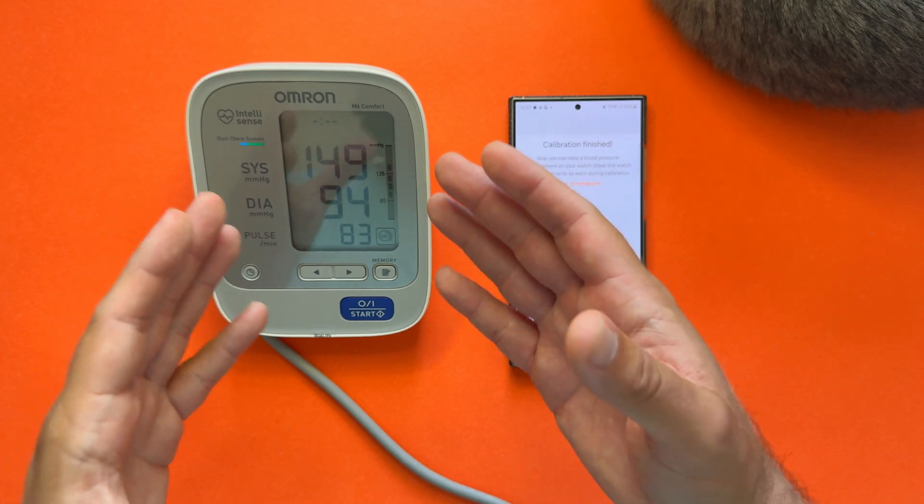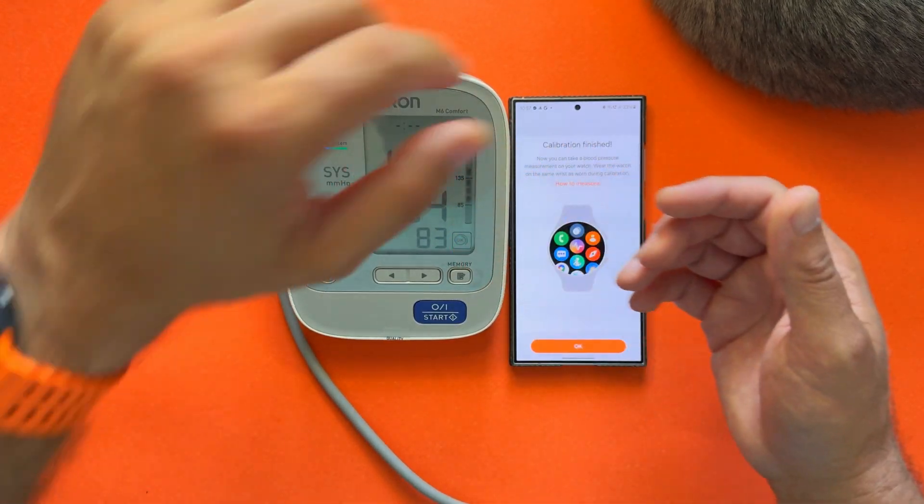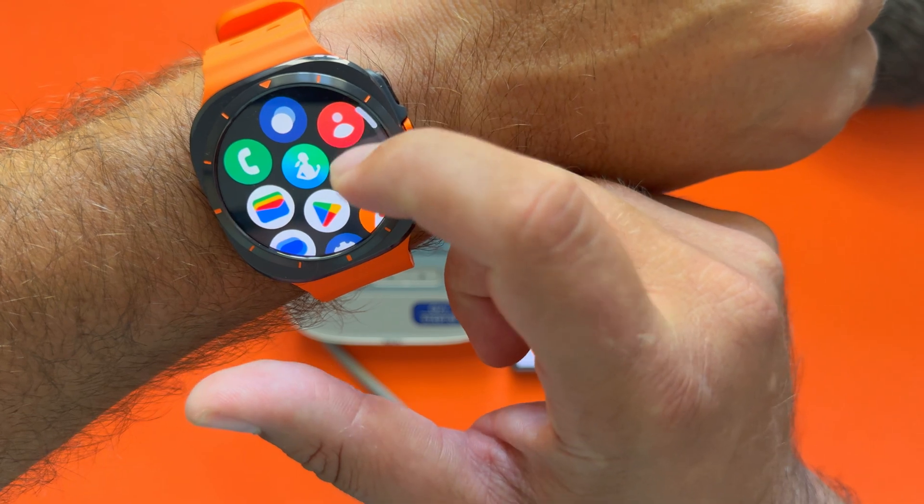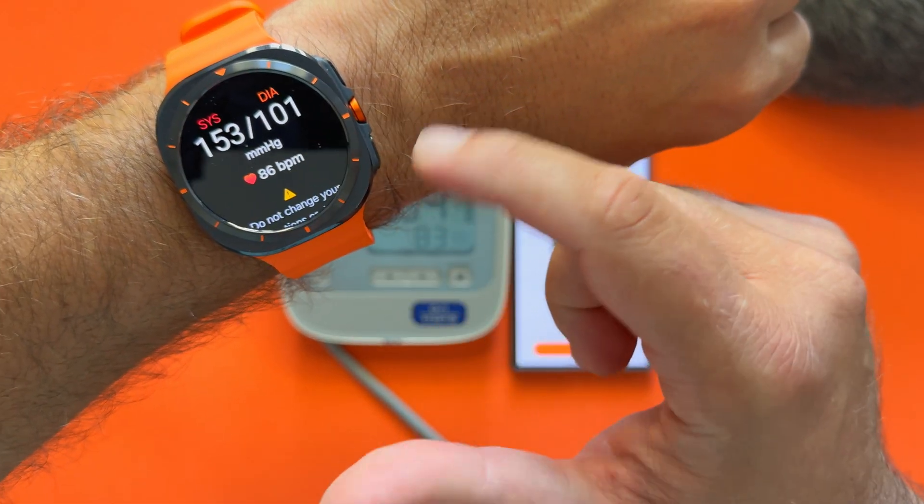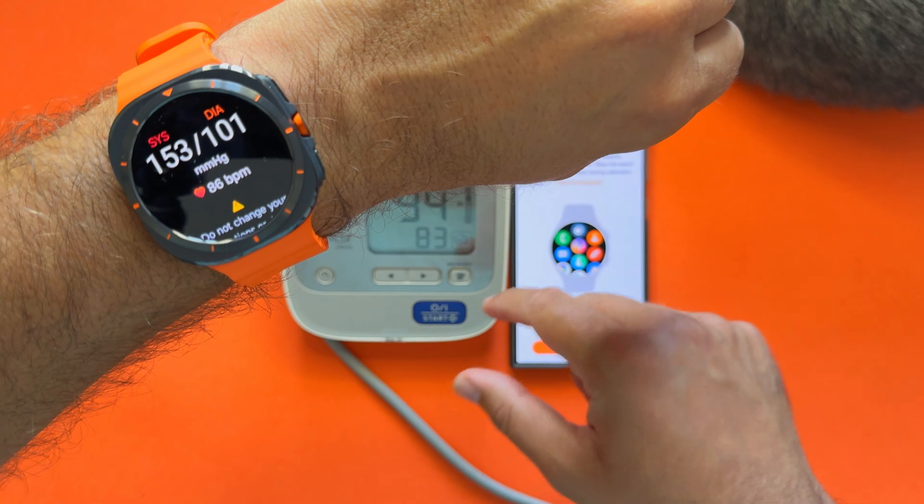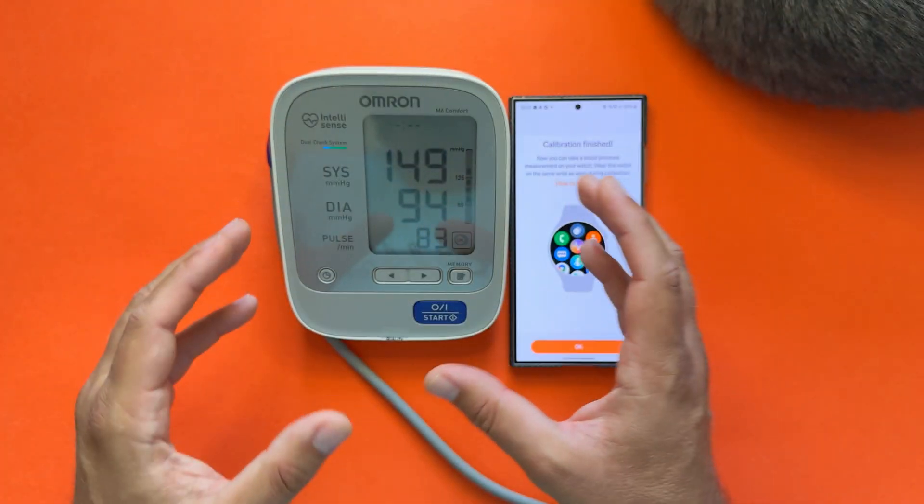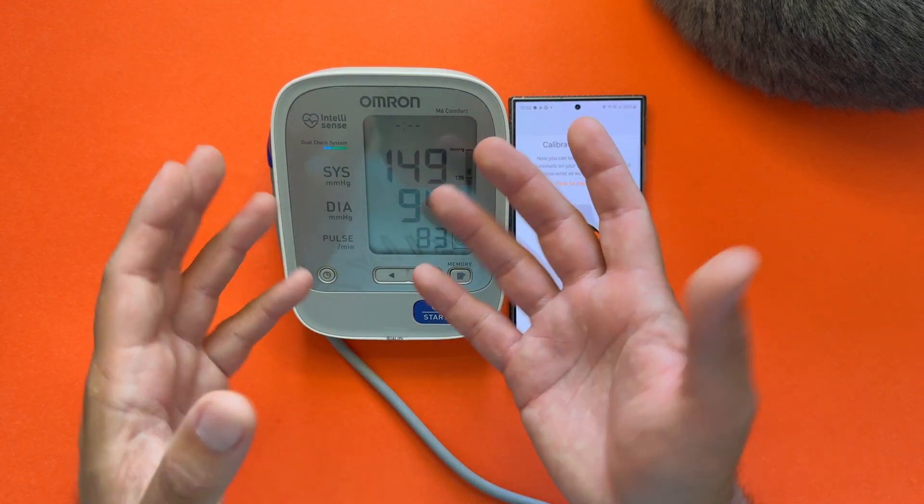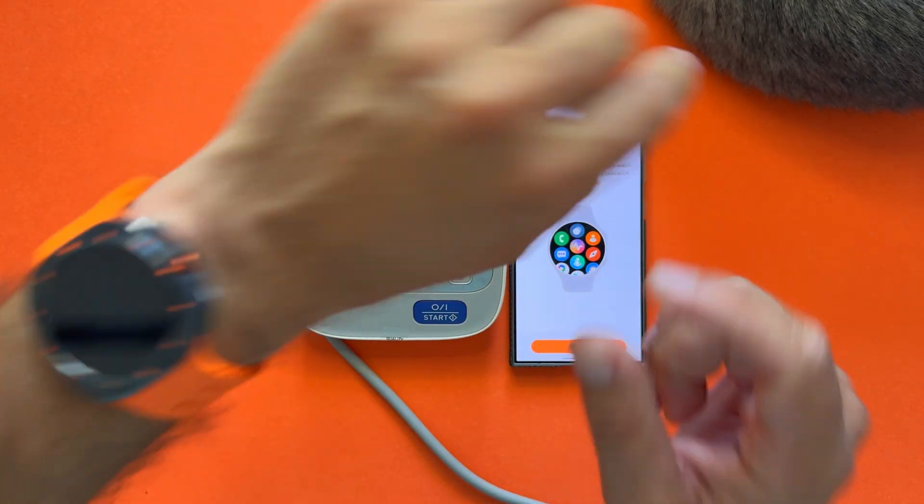So the Omron M6 Comfort blood monitor reported 149 over 94 and 83, and the watch—remember the watch did 153, which is actually not so far away, 101 a bit more far away on the diastolic, and the BPM was I think circa the same. You will not get really the same results all the time, but right now, again, I took coffees in the morning, so this was probably not the best time to calibrate it.